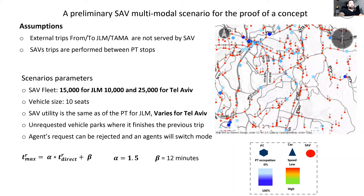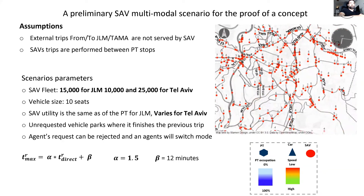For Jerusalem we used 15,000 vehicles, equivalent to 25,000 vehicles when adjusted for population size. For Tel Aviv multimodal we used 10,000 vehicles, and also 25,000. We published a paper explaining why 25,000 is a viable solution. We checked 10-seater cars and SAV utilities — the willingness to use shared automated vehicles is the same as public transport for Jerusalem. In Tel Aviv we tried different pricing schemes. A shared ride will not be more than 1.5 times longer than a regular ride.